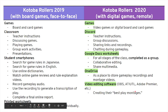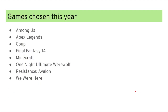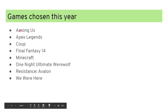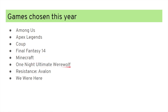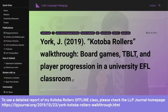The games students chose to play this year were: Among Us, Apex Legends, Coup (a board/card game), Final Fantasy 14, Minecraft, One Night Ultimate Werewolf (online version, like Coup), Resistance Avalon — which I personally recommended as a very good game — and finally We Were Here, a two-player information-gap style game. If you want to read about my 2019 model, the URL for the LLP website is on the slide and I'll make the slides available in the video description.